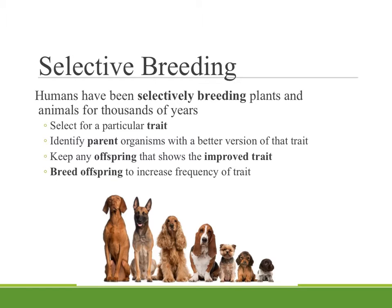I want to start by talking about selective breeding because I think you already have an understanding of how this works. Humans have been selectively breeding plants and animals for thousands of years to produce plants and animals that do what we want them to do. The basic process is you find a particular trait that you like and want to make more common, identify the parent organisms — whether two animals or two plants — that have that good version of the trait, breed them together, and keep the offspring that show the improved trait. Then breed those offspring to increase the frequency of the trait in the population.